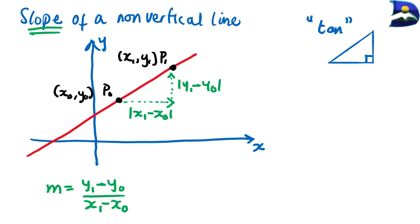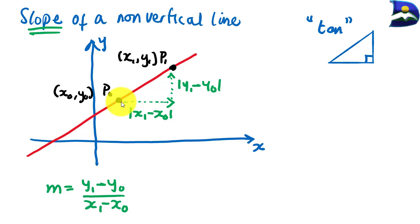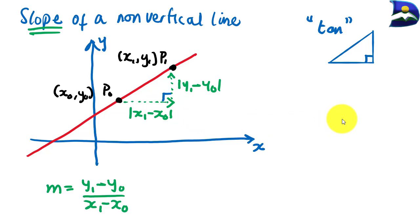Looking at this right angle triangle on our graph, we can observe the directions of x and y, and we can see the right angle symbol formed right here. Therefore, we can determine that a right angle triangle is formed on this graph.